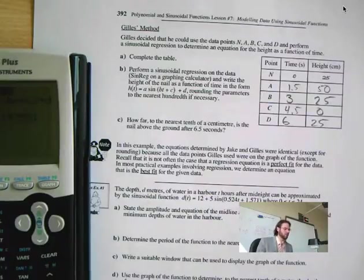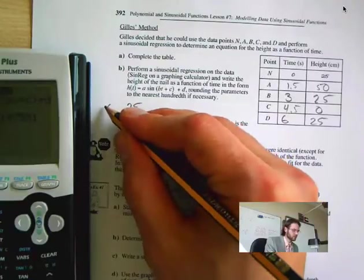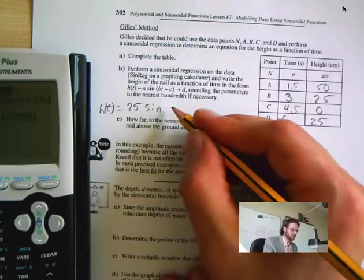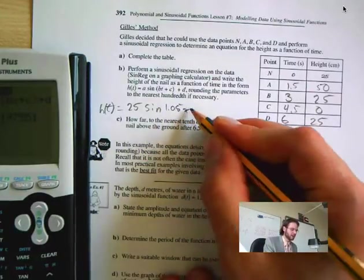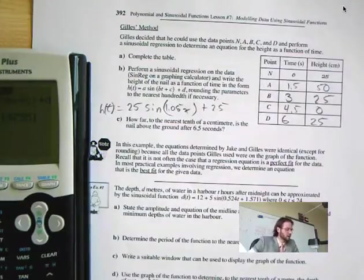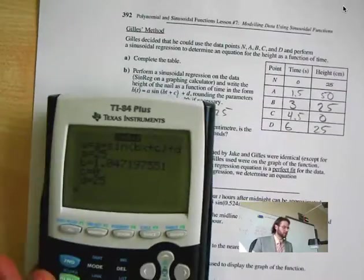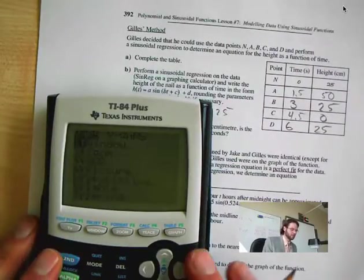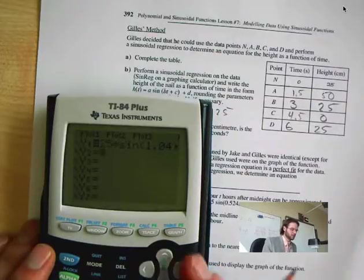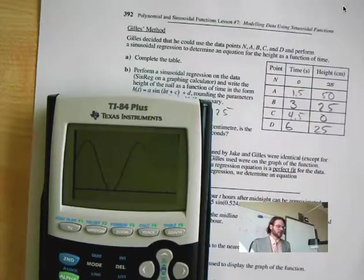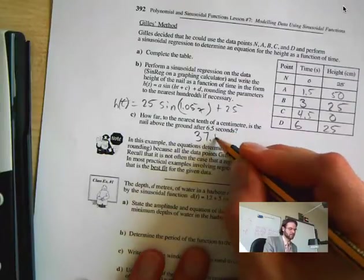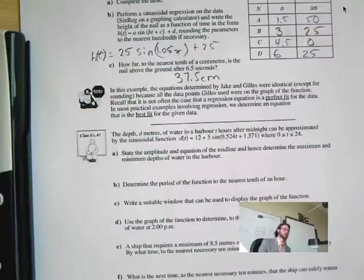Now complete the table. He saw it as, if we fill this out: Ht is equal to 25 sine 1.05, 25x, and he says plus 25. There is no C. Now, how far to the nearest tenth is after 6 seconds? I have to put in my statistics regression. Regression, enter. So I graph that. And he wants after 6.5 seconds. Trace, 6.5. He gets 37.5. Same thing. So those are two ways of doing it. I prefer the other way, but you can also do it this way here.